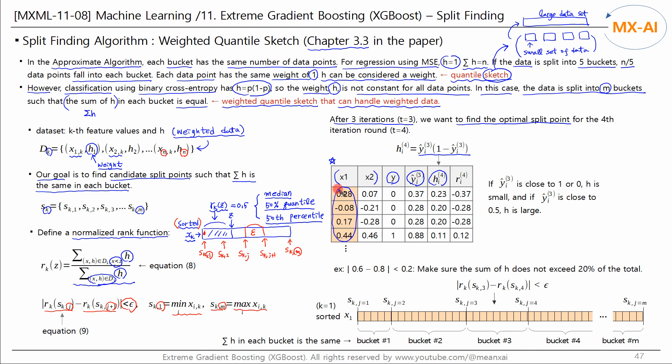The feature x vector and the h vector are uppercase D1 shown on the left. The closer the predicted probability y-hat is to 0 or 1, the smaller the h value. On the other hand, the closer the predicted probability y-hat is to 0.5, the larger the h value. When y-hat is 0 or 1, h is 0. And when y-hat is 0.5, h is the largest at 0.25. If the predicted probability is close to 1 or 0, the prediction is confident enough and the data point is given small weight. On the other hand, if the predicted probability is close to 0.5, the prediction is not confident and the data point is given higher weight.